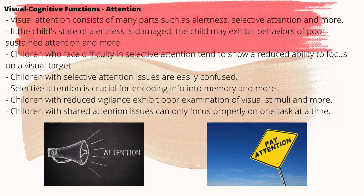Under visual cognitive functions, visual attention consists of many components such as alertness, selective attention, vigilance, and shared attention. If the child's state of alertness is impaired, the child may exhibit poor sustained attention. Children who struggle with selective attention show reduced ability to focus on a visual target, may have difficulty screening out irrelevant information, and may focus on irrelevant stimuli. Children with selective attention issues are easily confused, and selective attention is very important for encoding information into memory.